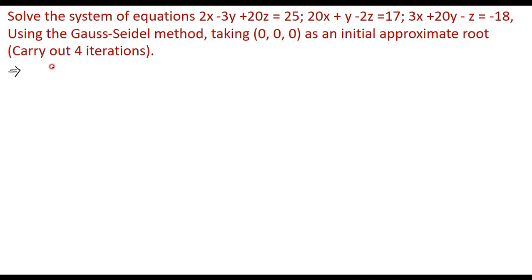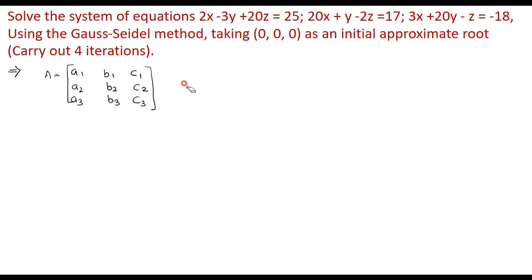Suppose we have a matrix A of the form with elements A1, B1, C1 in the first row; A2, B2, C2 in the second row; and A3, B3, C3 in the third row. Diagonally dominant means that the modulus of the diagonal element in a particular row should be greater than or equal to the sum of the other elements in that row.